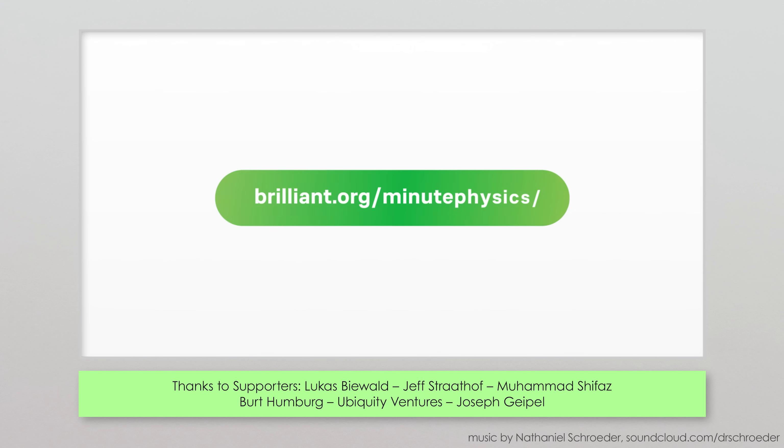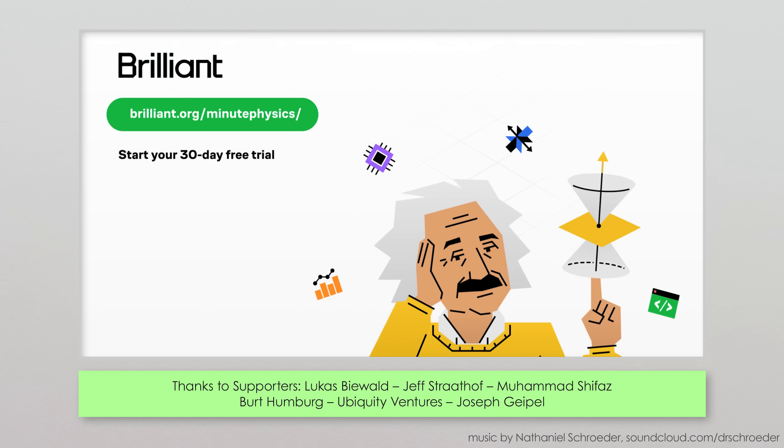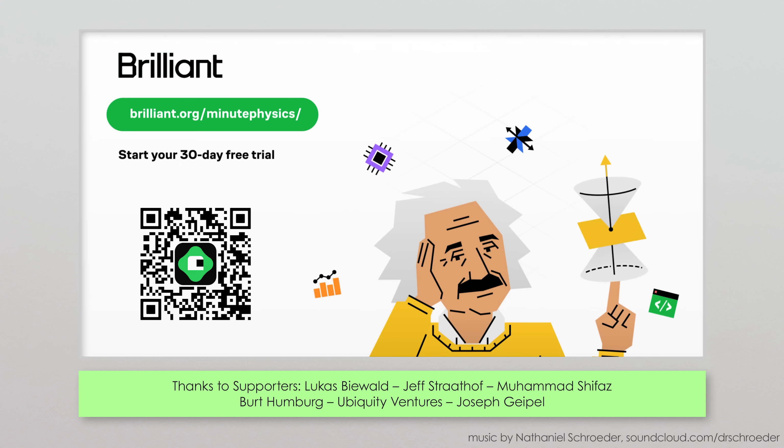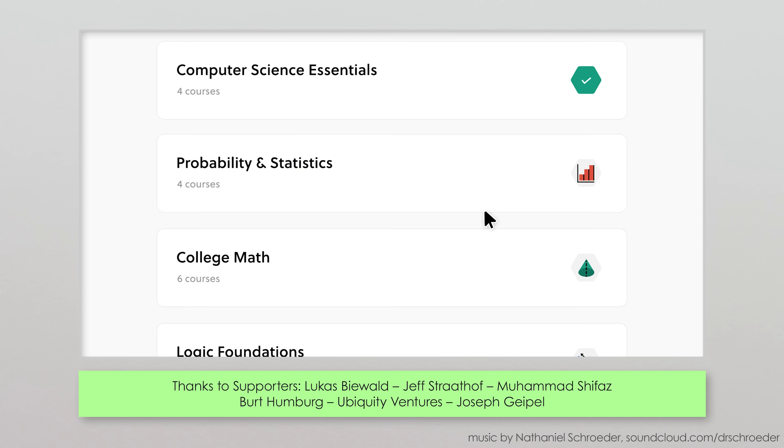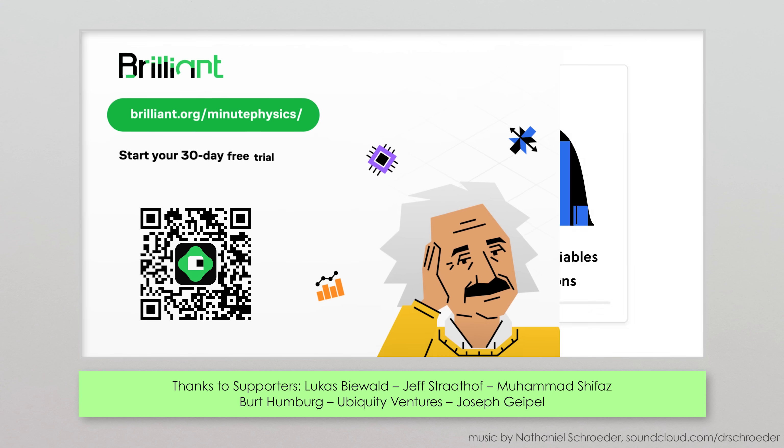Sign up for Brilliant for free and get 30 days of full access to all of their courses at Brilliant.org slash MinutePhysics, or click on the link in the description. Plus, you'll get 20% off an annual premium subscription for all of Brilliant's content. Again, that's Brilliant.org slash MinutePhysics. Thanks to Brilliant for their support.